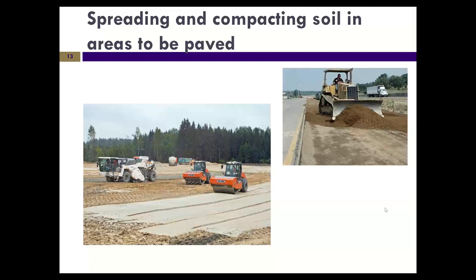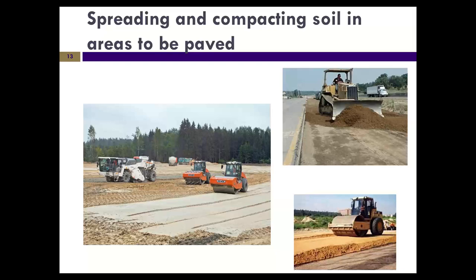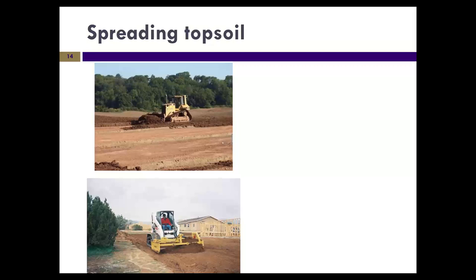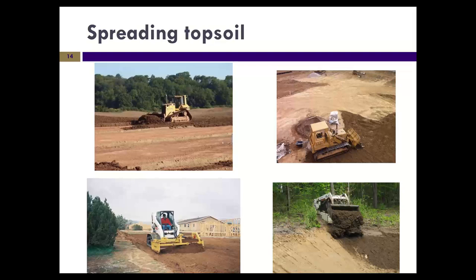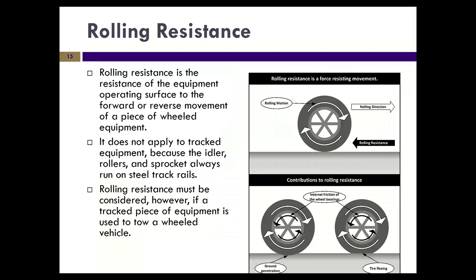In a highway operation, trucks dump material in windrow piles, then a dozer blades it flat, and a roller compacts it — a very common operation. Topsoil is spread by dozers. Sometimes you can rig equipment — a skid steer or track loader with a bucket — to place topsoil. Here's a skid steer with a bucket being used to place topsoil, which is a pretty straightforward operation.